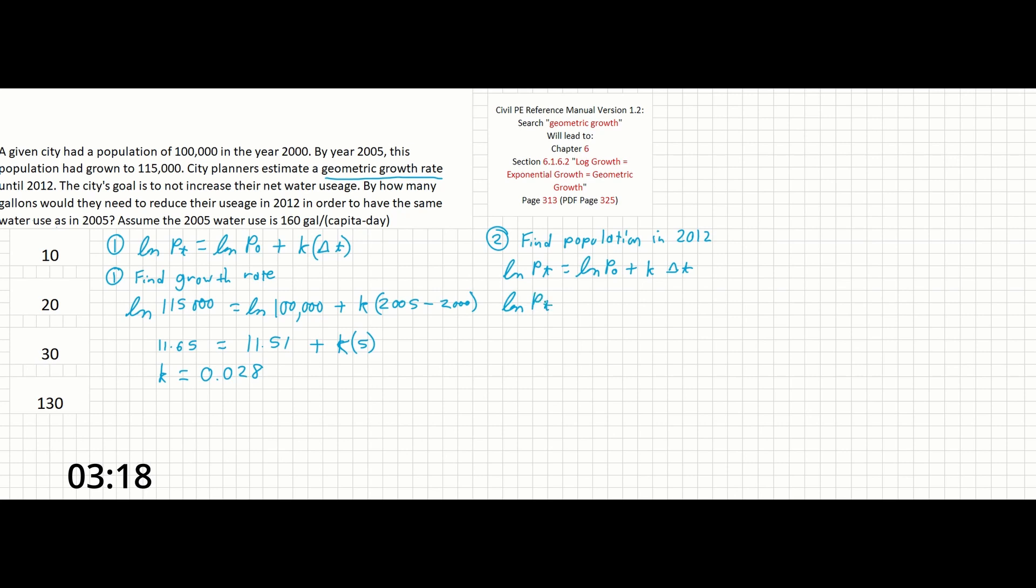ln of p sub 0, the new year that we want is going to be 2005. So we're going to place 115,000 in this variable. And then k we can fill in of 0.028 and delta t is going to be 2012 minus 2005, the years corresponding to the populations that we have.